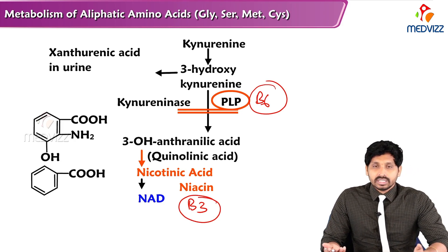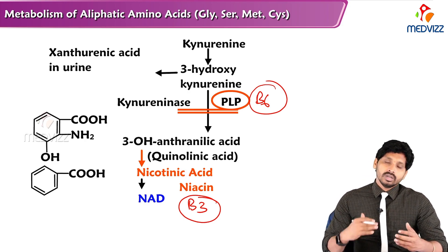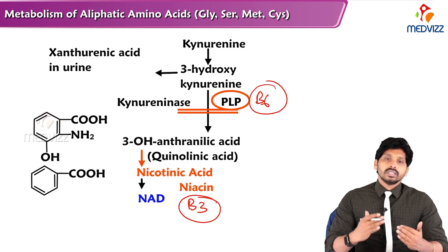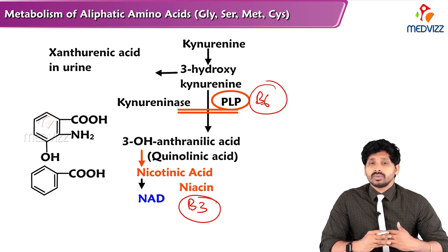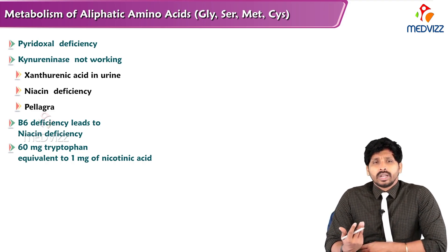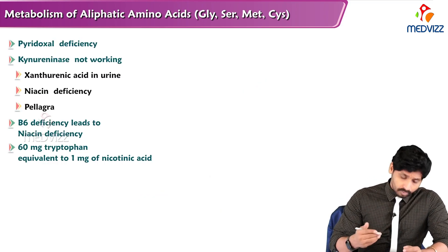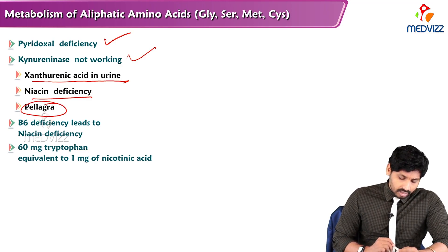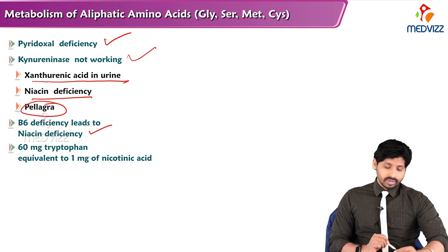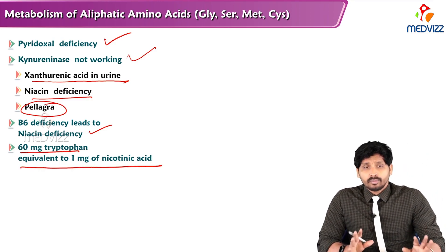One vitamin deficiency leading to another is a key example: PLP (B6) deficiency means there is no conversion of 3-hydroxykynurenine to anthranilic acid or quinolinic acid, so there is no formation of B3 or NAD+. Pyridoxal deficiency causes kynureninase to stop working, accumulated 3-hydroxykynurenine converts to xanthurenic acid and is excreted in urine. Niacin deficiency causes pellagra. Also, 60 mg of tryptophan is equivalent to 1 mg of nicotinic acid.